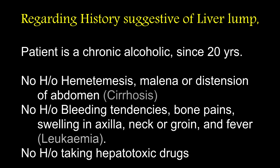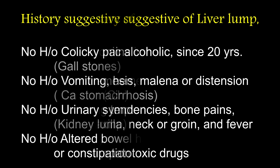The patient is a chronic alcoholic since 20 years. No history of hematemesis, melena or distension of abdomen. No history of bleeding tendencies, bone pains, swellings in the axilla, neck or groin. No history of taking hepatotoxic drugs like anti-tuberculosis drugs.